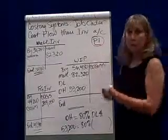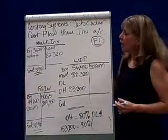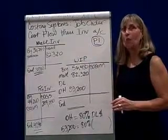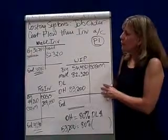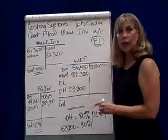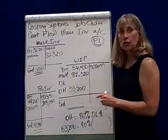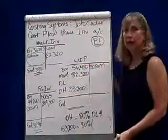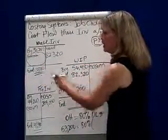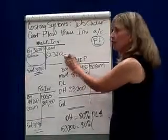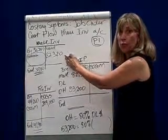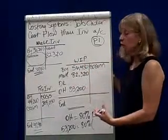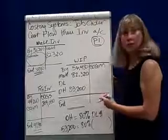We're going to look at problem one in your text and fill in the numbers that we know, then find the numbers we don't know. In the problem, beginning material inventory is $36,240. We don't know how many materials were purchased during the period, but ending is $38,910. The materials used in the production process — that first flowed into work in process and onto a job order cost card — was $82,320.